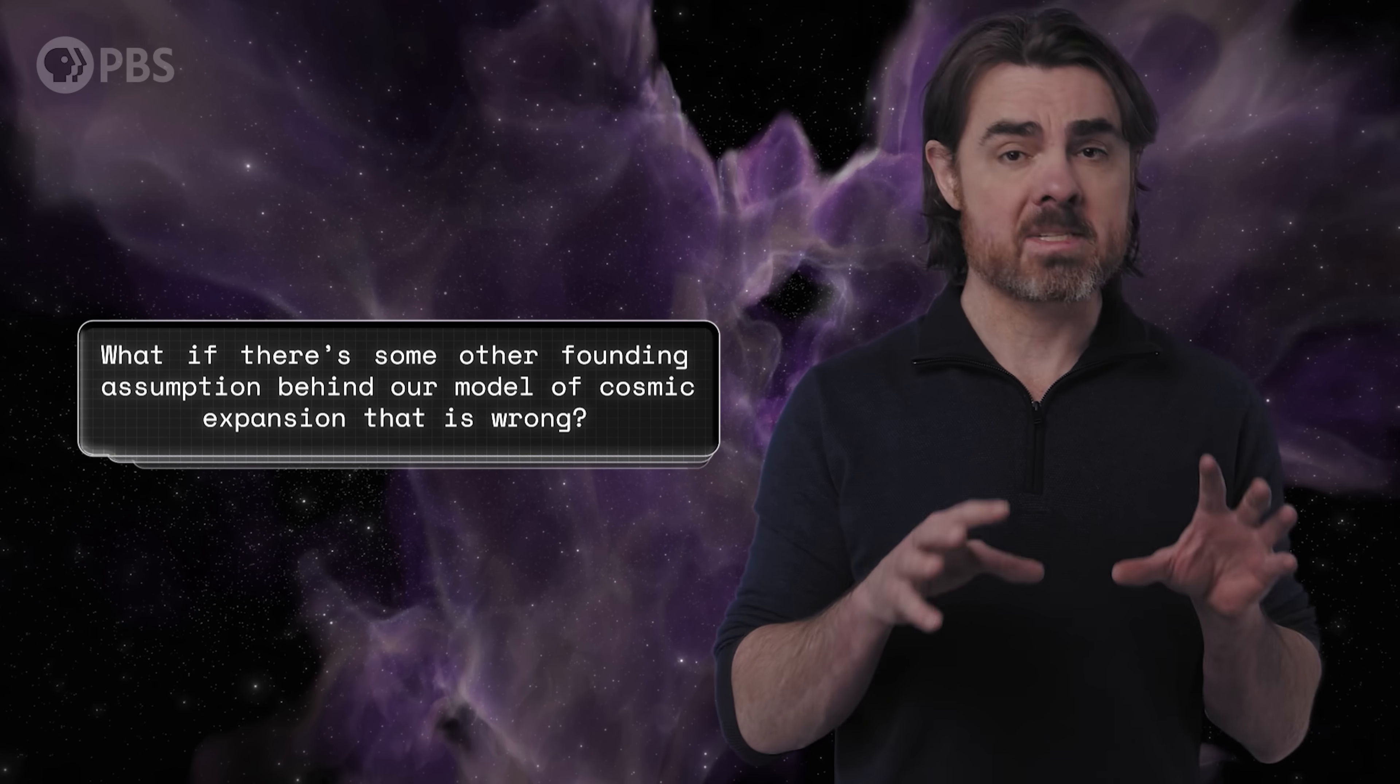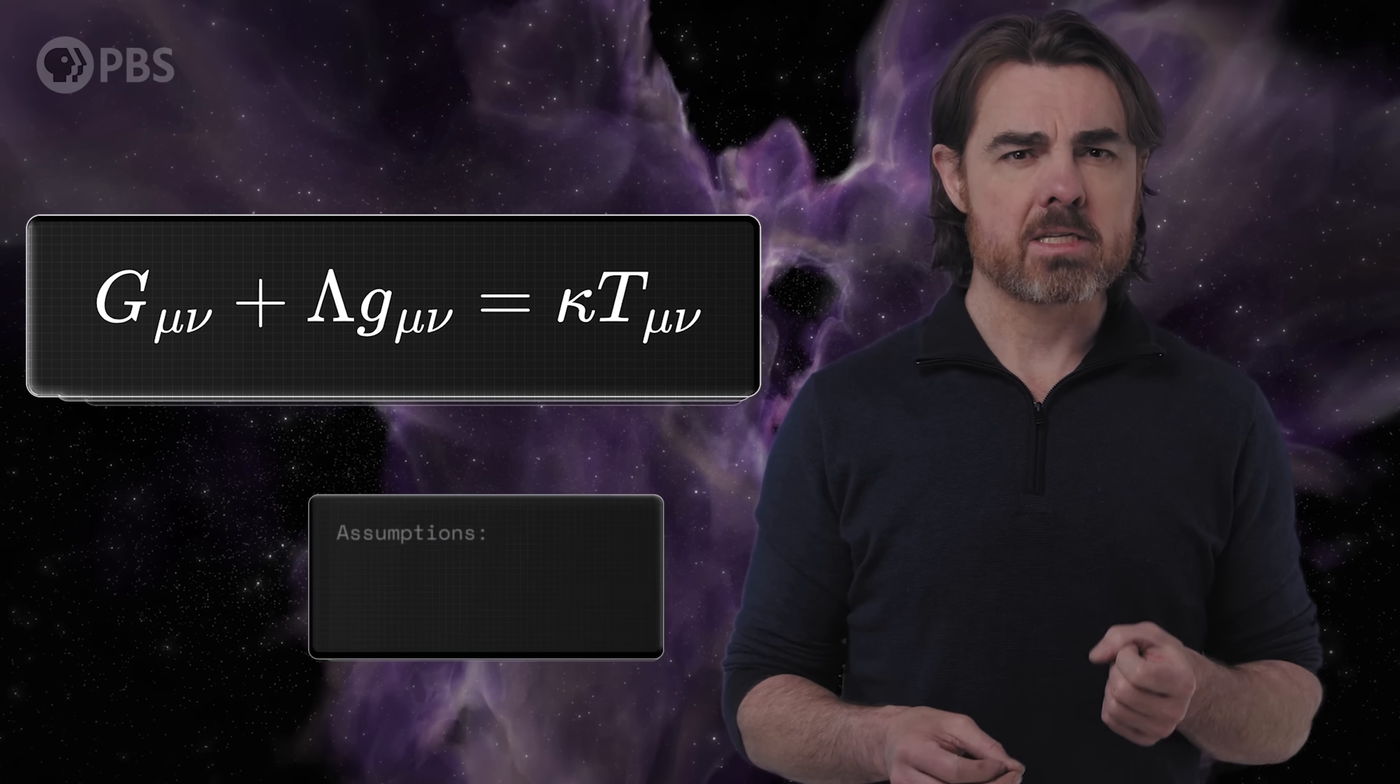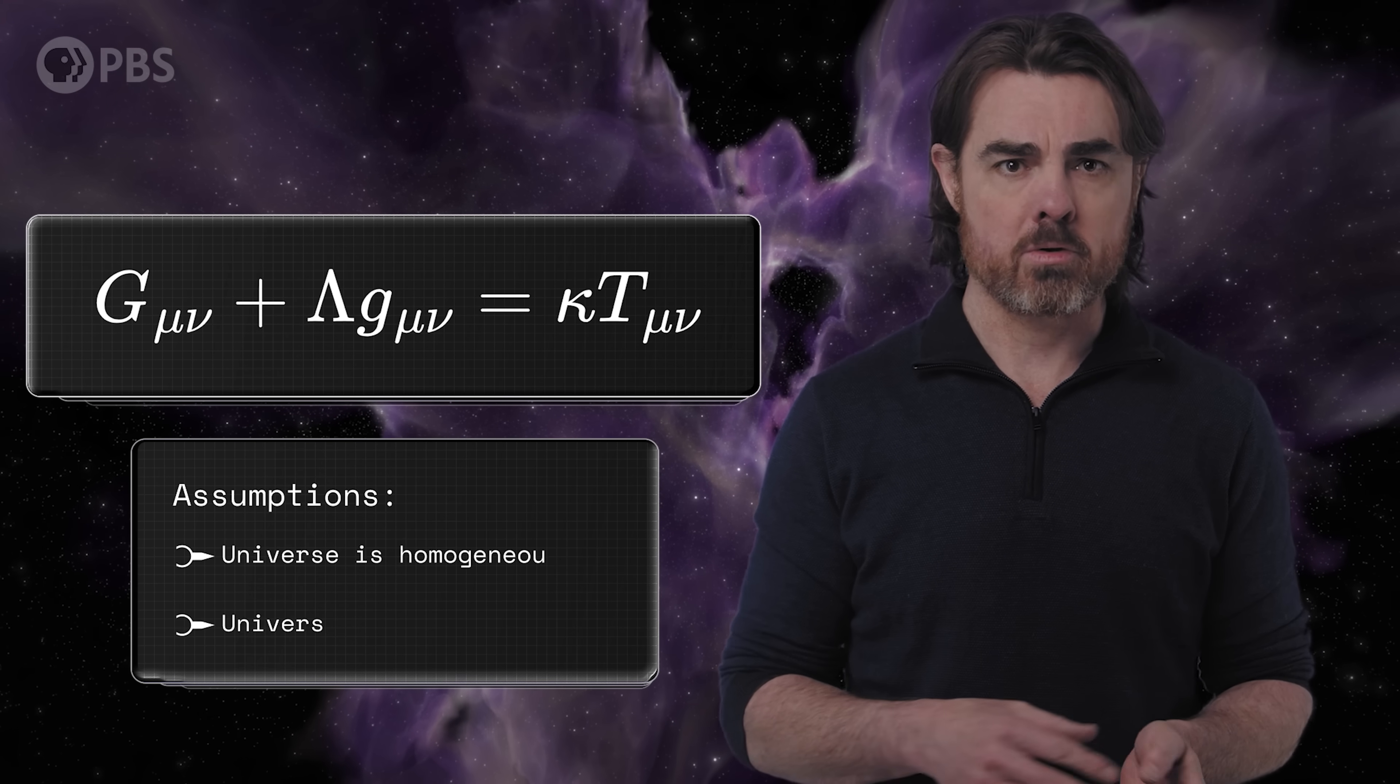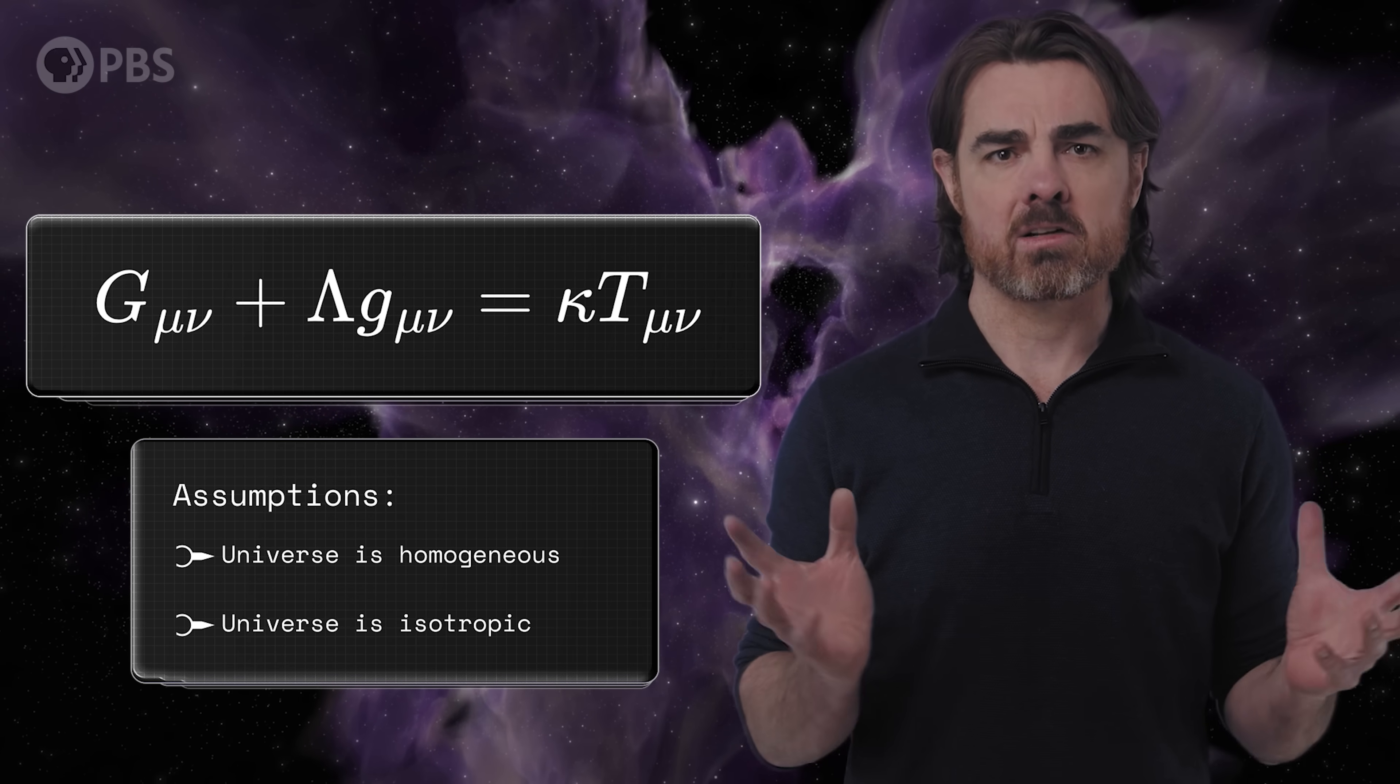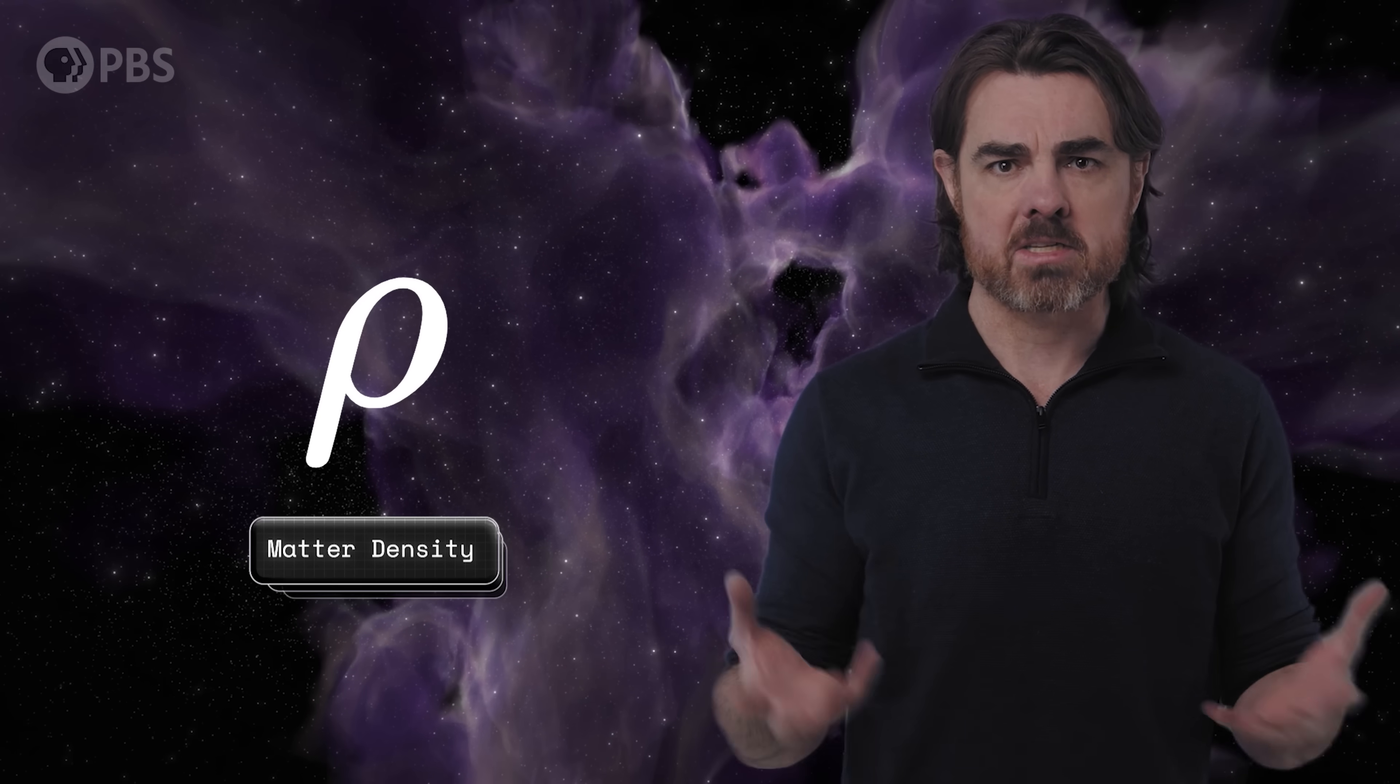But what if there's some other founding assumption behind our model of cosmic expansion that is wrong? That's basically what the timescape model is saying. To understand the different factors driving the expansion of the universe, we need to solve the equations of general relativity for the entire universe. That's only possible with some pretty major simplifications. The main one is that we assume that matter in the universe is spread out smoothly everywhere, is both homogeneous and isotropic. No large-scale lumps or directionality. This lets us describe the effect of matter with a single number, the matter density, rather than having to solve for every chunk of matter separately. The result is the Friedman equations, which we've picked apart before. And they describe how the size of the universe changes over time, driven by smoothly distributed matter and constant dark energy. Add the appropriate amounts of both, and you can describe our universe, and that's the lambda-CDM model.